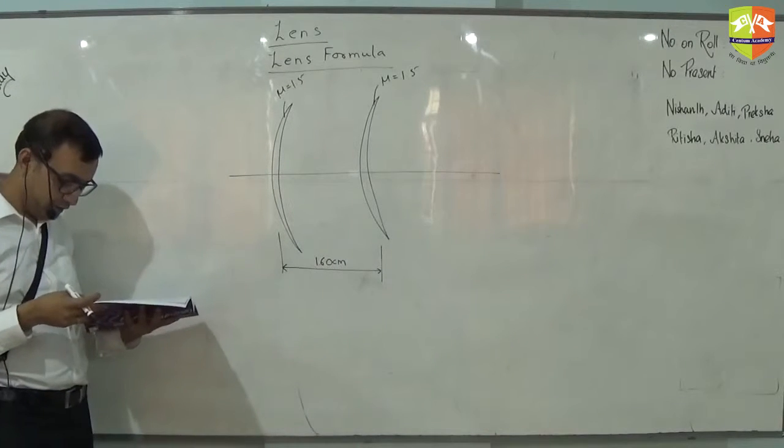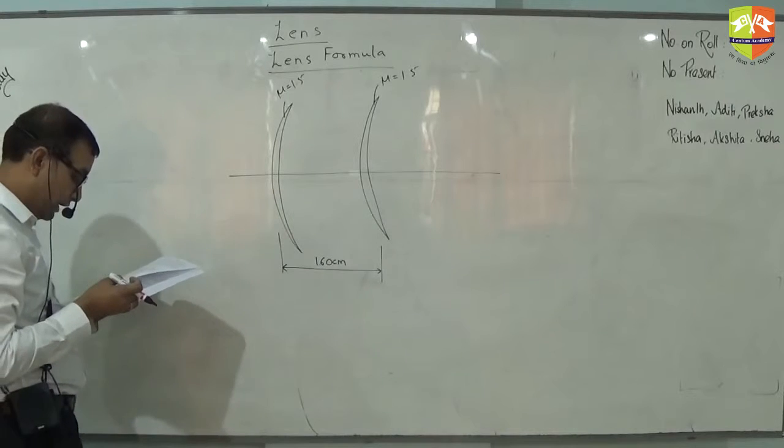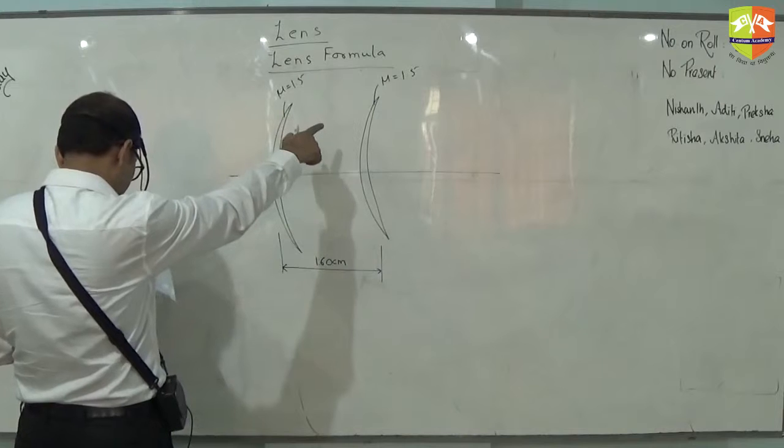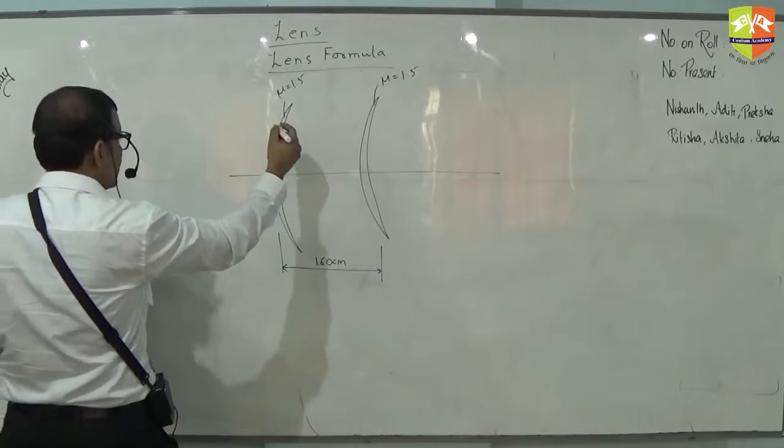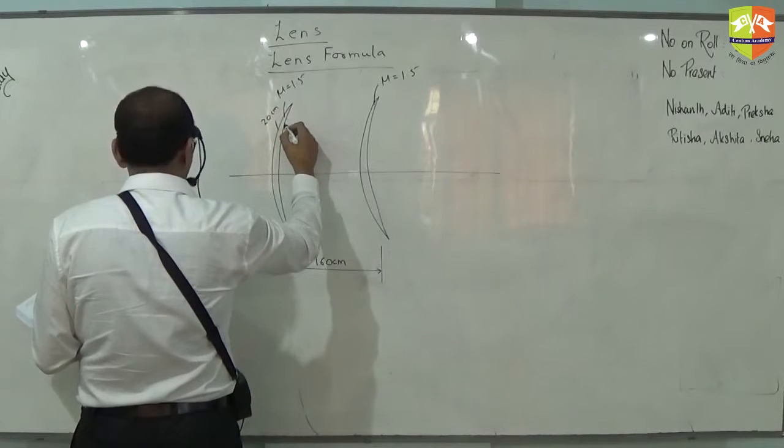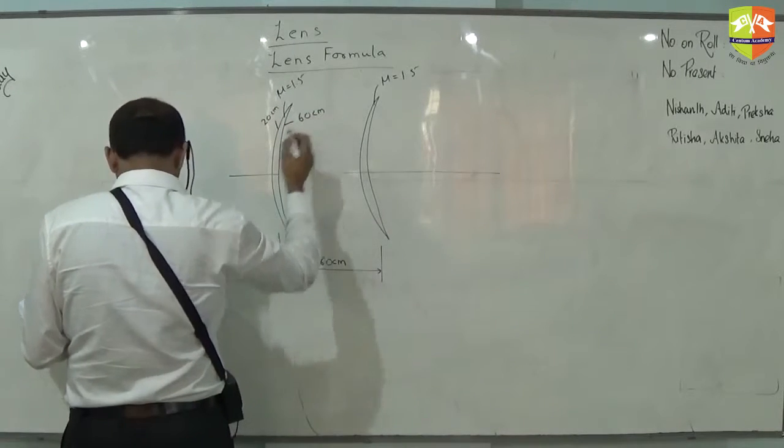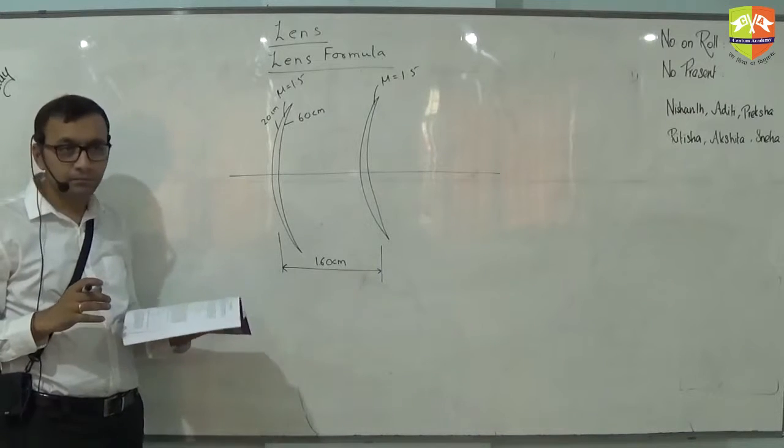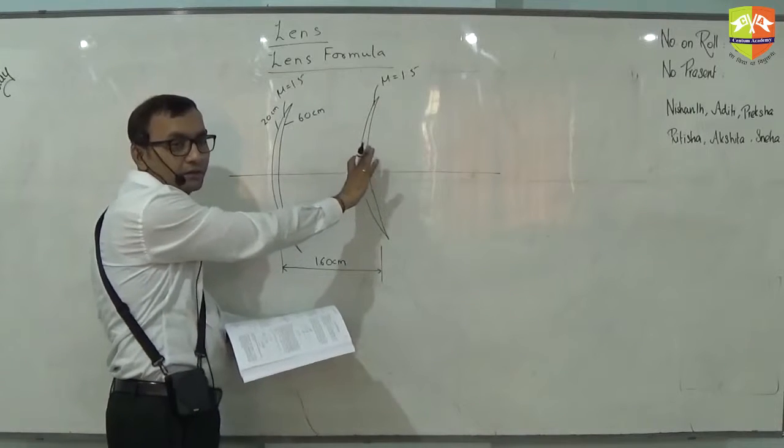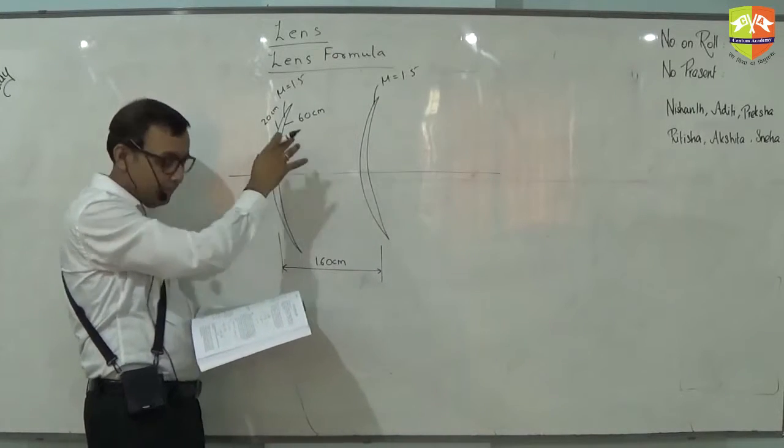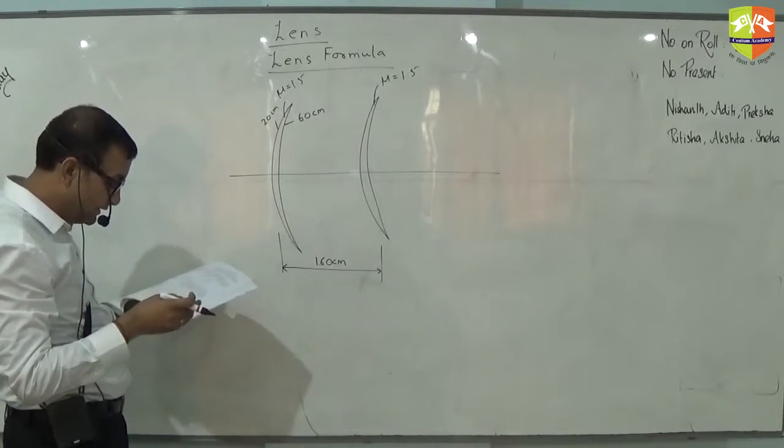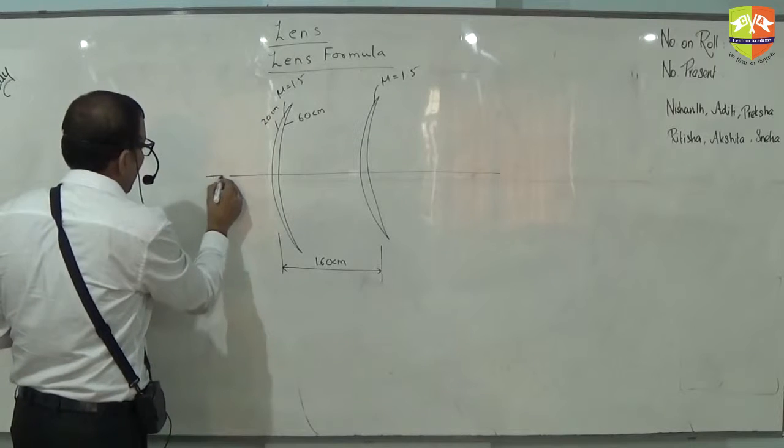You have a concave-convex lens made up of glass of refractive index 1.5 and has surfaces of radii 20 cm and 60 cm. Initially you had only one lens, this was not there initially. You had only one lens.